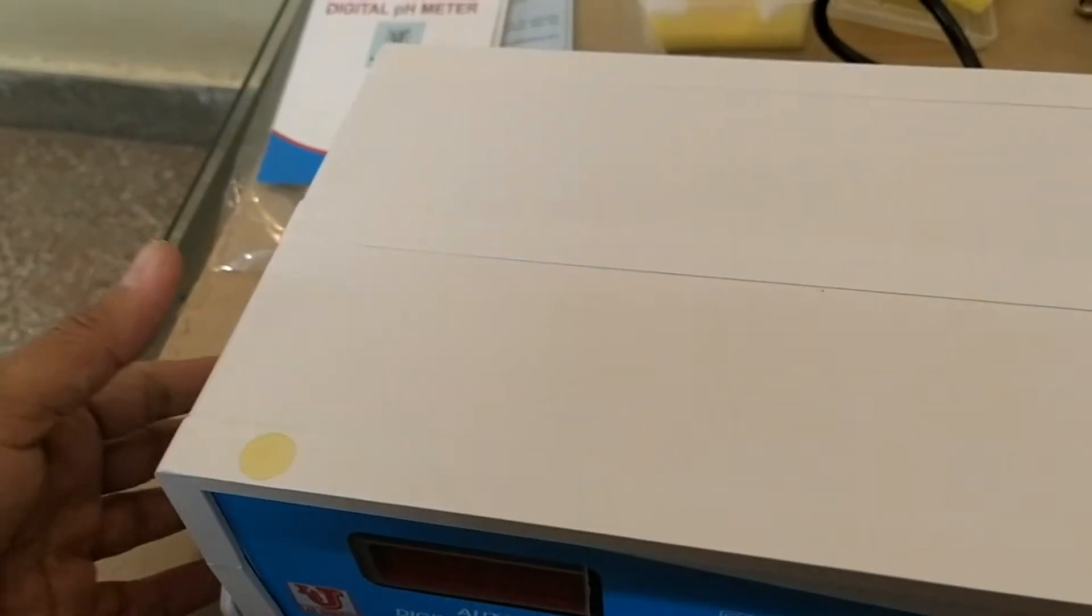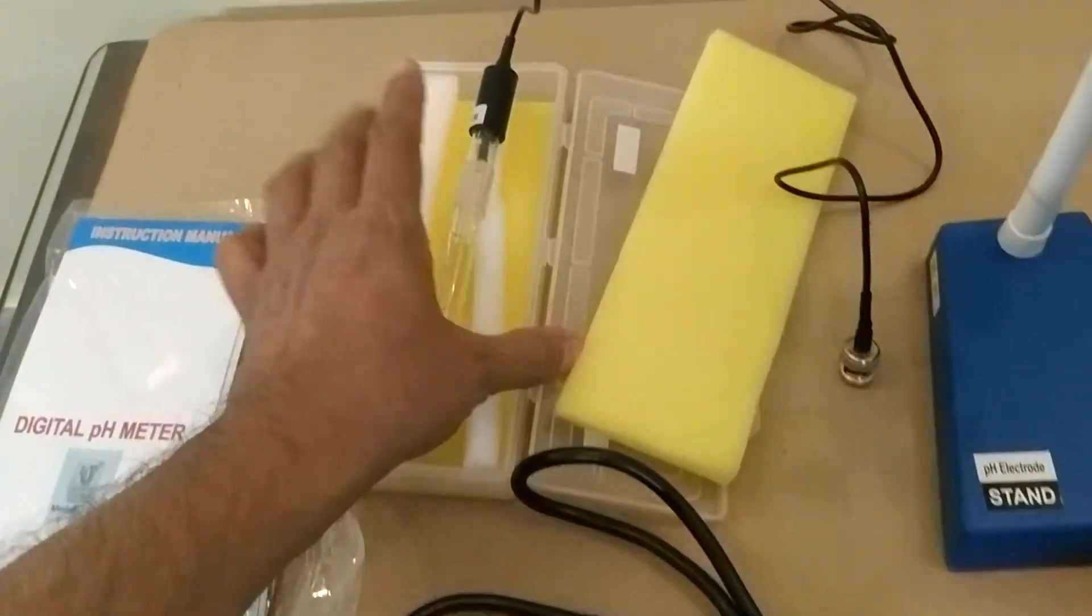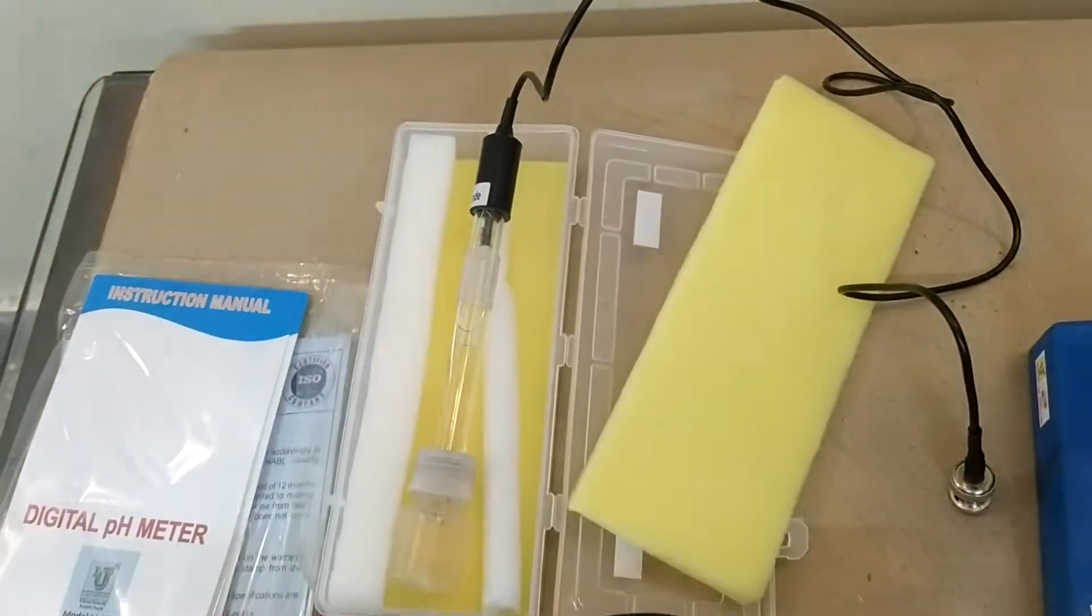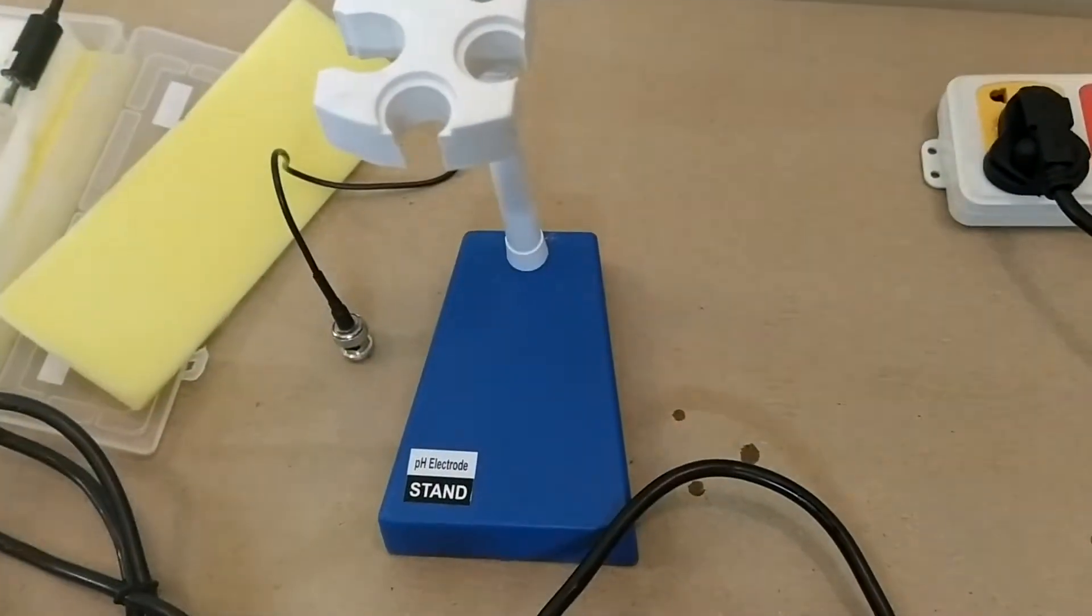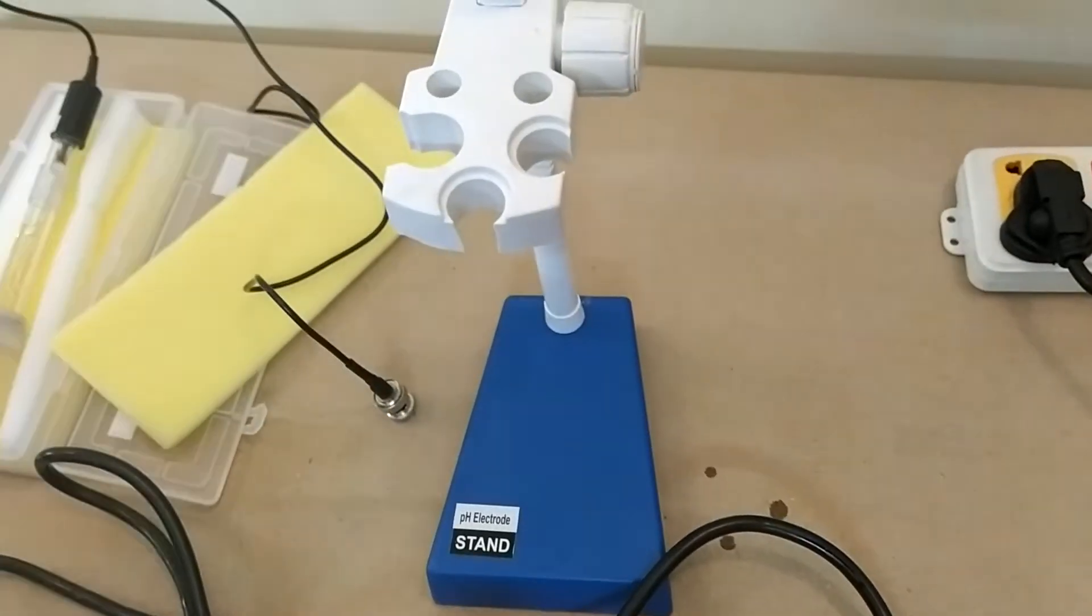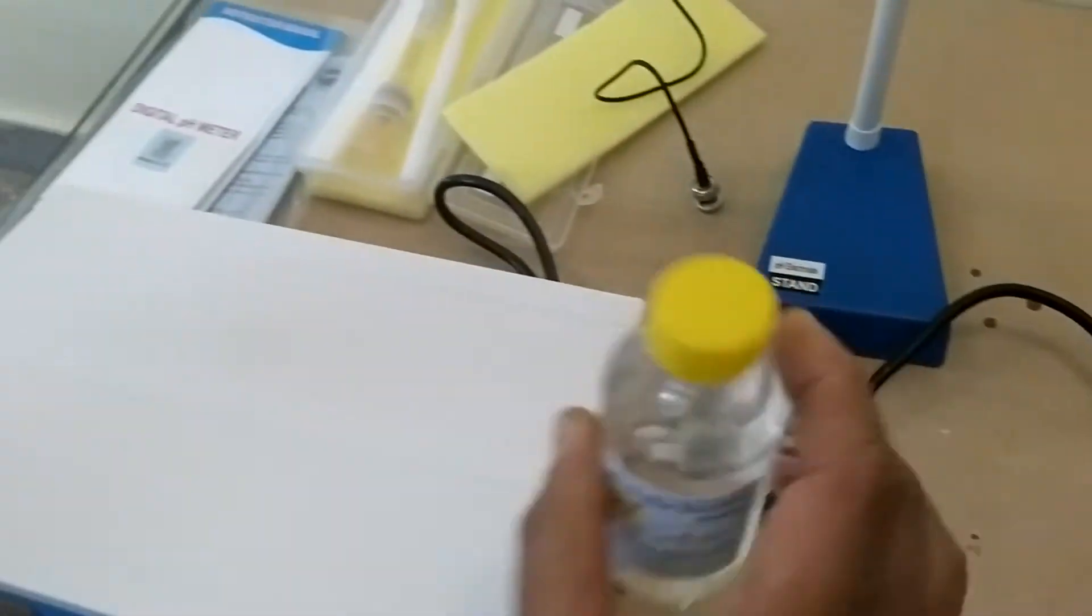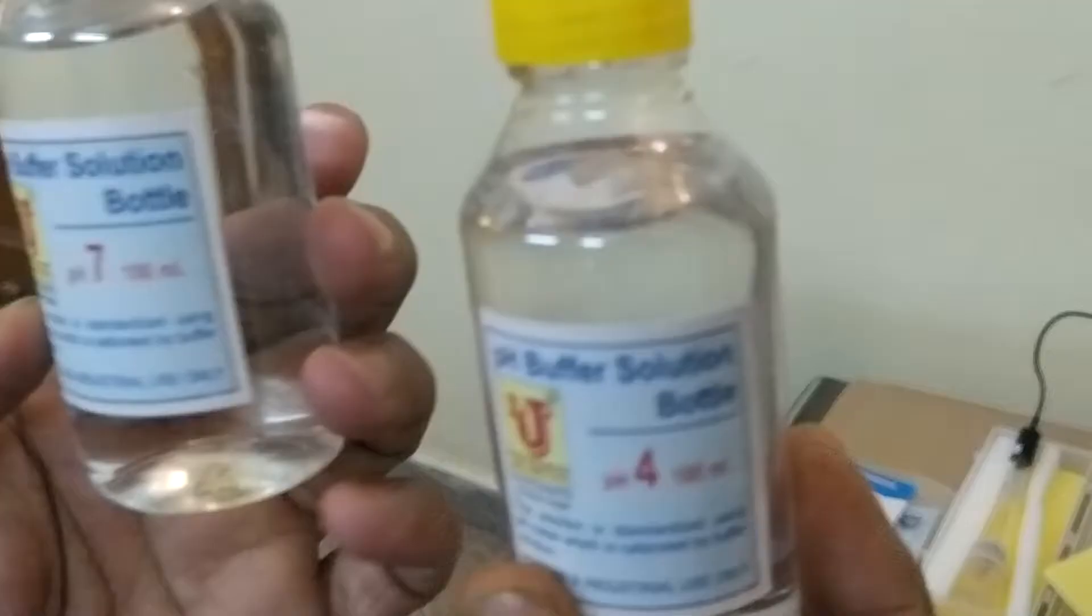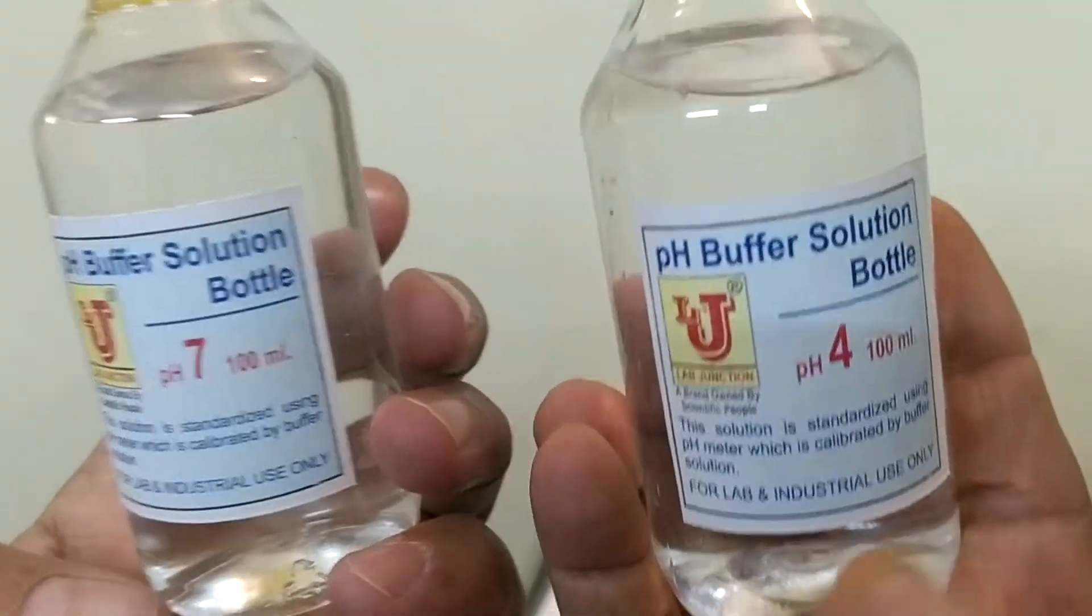In this, one is pH meter, two is pH electrode, third one is stand for pH electrode. And you got two buffers: standard pH buffers, 7 pH and 4 pH.